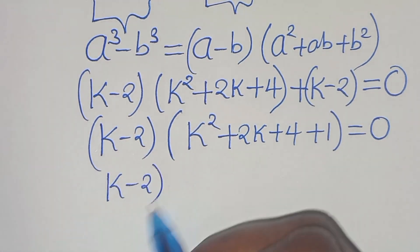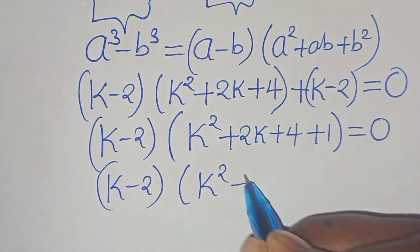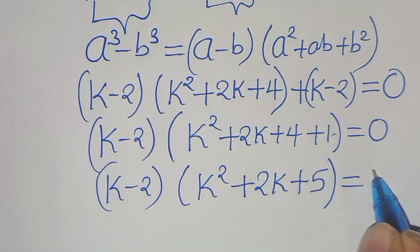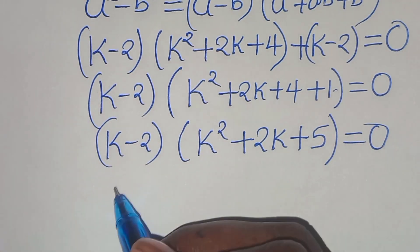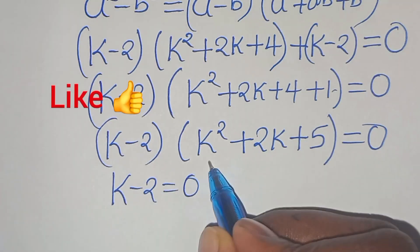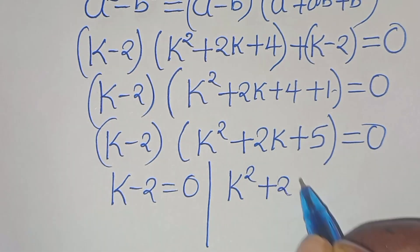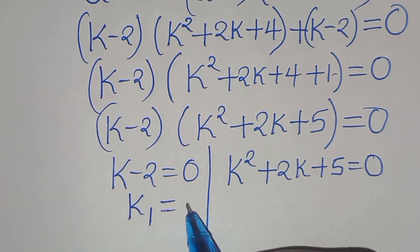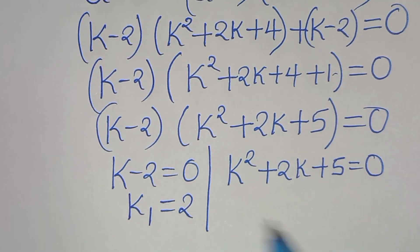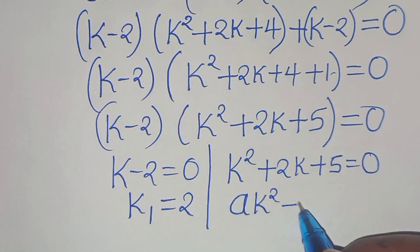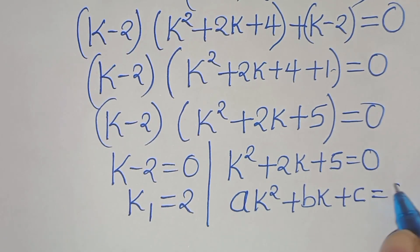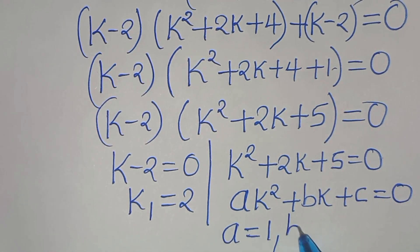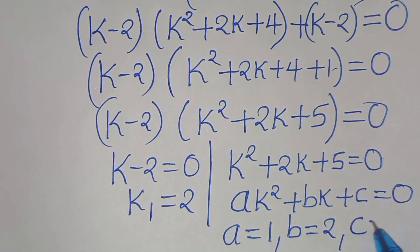So we have k minus 2, this is k squared plus 2k, then plus 4 plus 1, which is 5, this is equal to 0. We have two parts here: the first part is k minus 2 equals 0, the second part is k squared plus 2k plus 5 equals 0. From the first part we have that k1 is equal to 2. The second part is a quadratic equation of the form ak squared plus bk plus c equals 0, where a equals 1, b equals 2, and c equals 5.